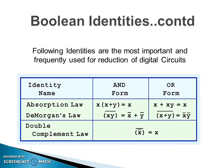The following Boolean identities are most important and frequently used for reduction of digital circuits. The first is the Absorption Law. The second is De Morgan's Law, which is very popular and widely used. De Morgan's Law states that the complement of ANDing two variables is the same as ORing the complements of individual variables. Another form states that the complement of ORing two variables is the same as ANDing the complements of individual variables. The third important identity is the Double Complement Law, which states that complementing any variable twice gives back the original variable x.